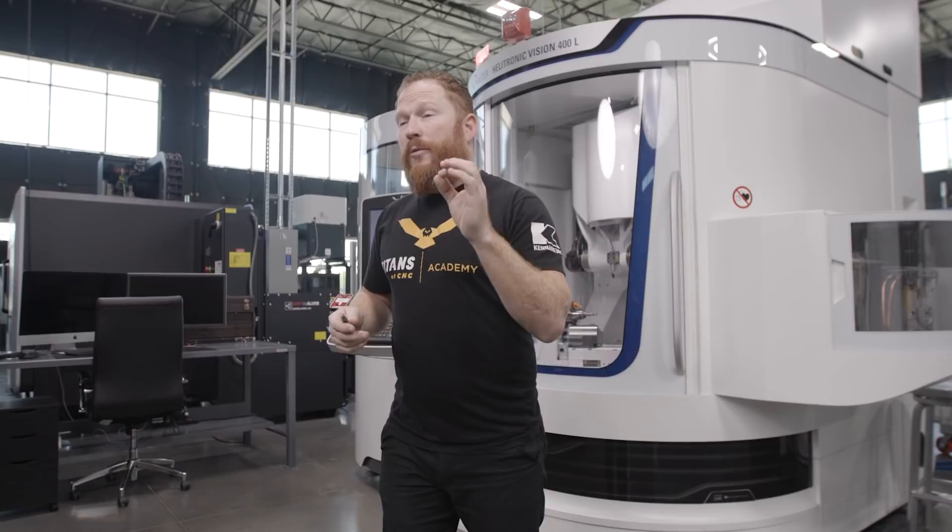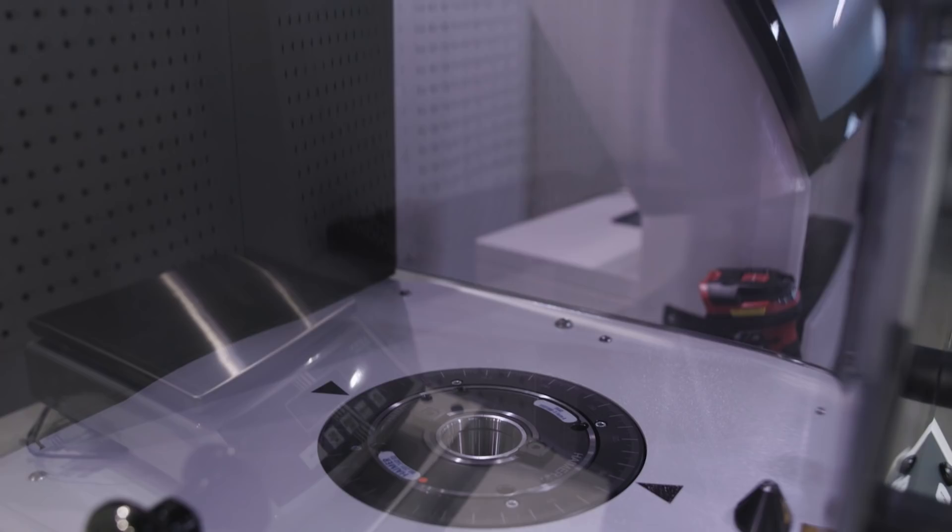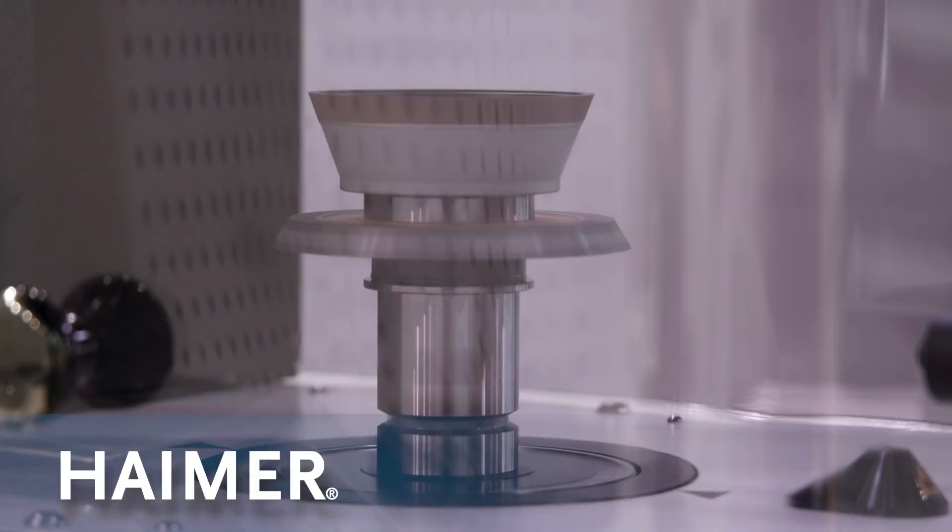After we dress our wheels, we're going to go over to our Hymer Comfort Dynamic Plus Wheel balancer. We're going to ensure that our wheels are balanced properly. That's going to give us wheel life, increase the life of our spindle, and also ensure that our tool comes out perfect.